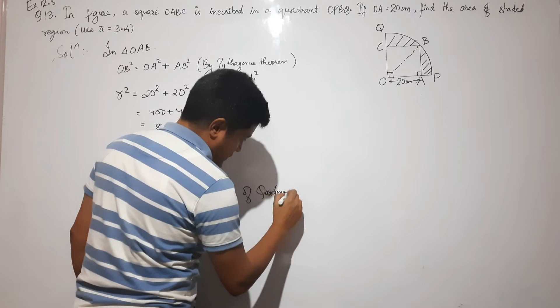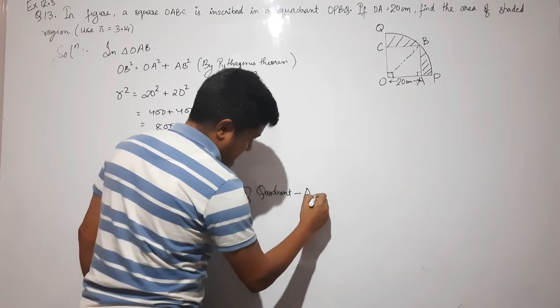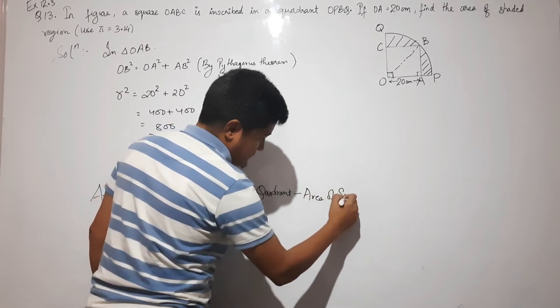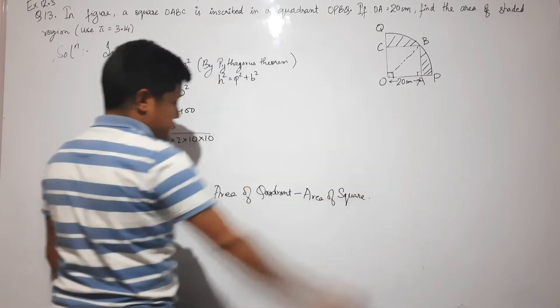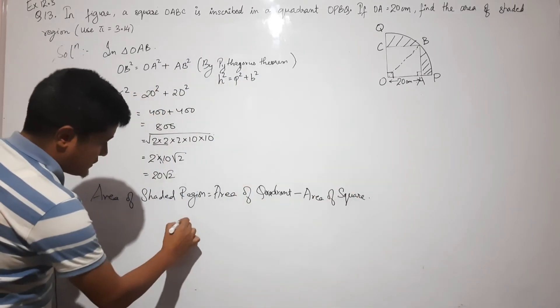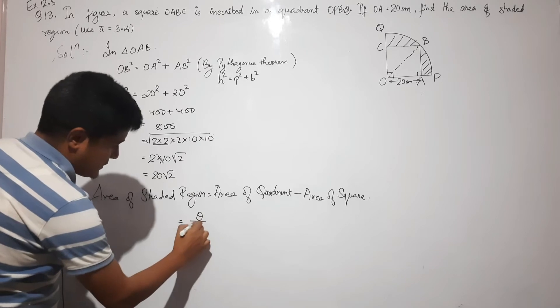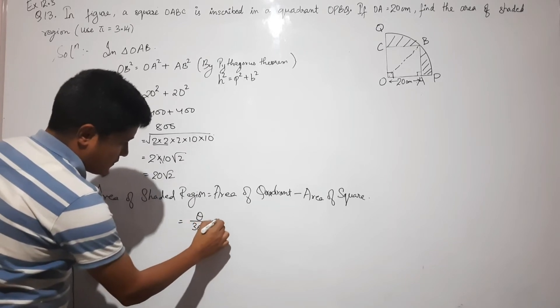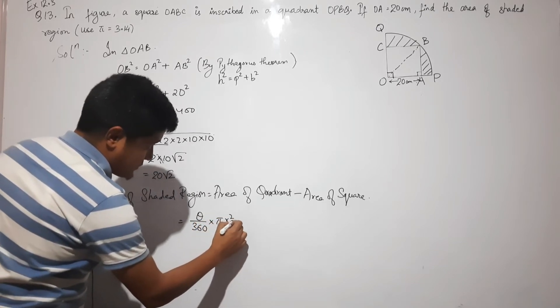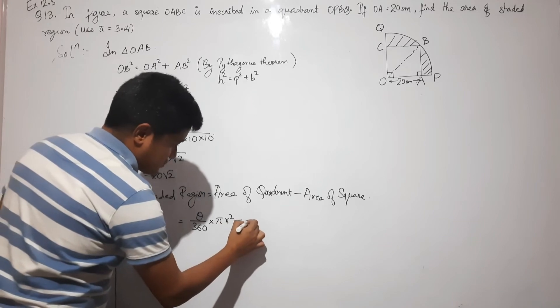minus the area of square OABC. The area of quadrant formula is θ/360 × πr² minus side × side.